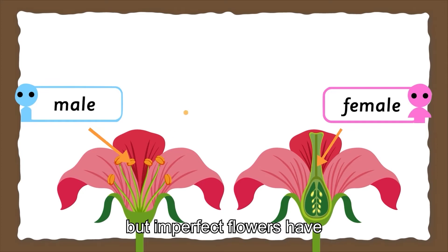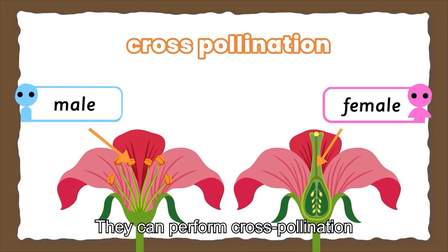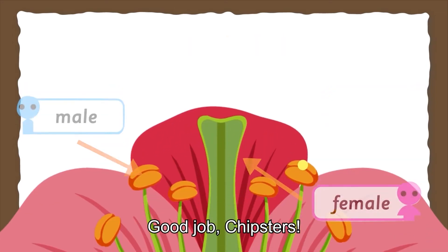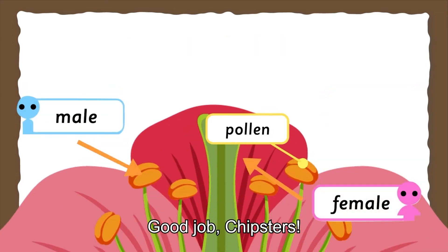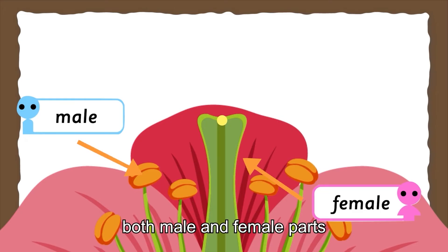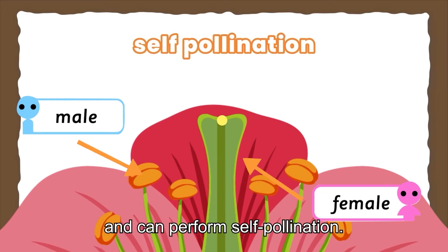Imperfect flowers have only male or only female parts. They can perform cross-pollination, but not self-pollination. Perfect flowers have both male and female parts and can perform self-pollination.